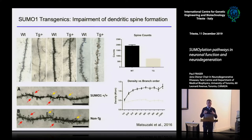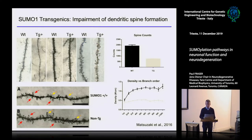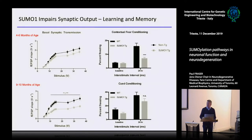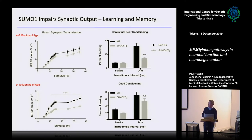The spine count decrease doesn't happen in just a specific area — if you look all the way down the pyramidal neurons, spine counts are decreased across the board. The synaptic transmission failure is also age-related: as these animals get older, the condition gets worse. Comparing synaptic transmission at 4-6 months versus 9-10 months shows a progressive decline. The combination of all of these in the SUMO1 mice results in severe cognitive impairment.